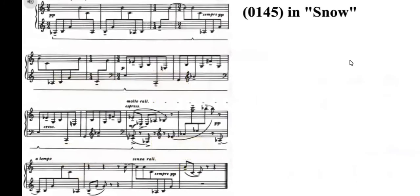Now, let's look into the score and see how the composer exploits these two musical ideas. First, we shall focus on the application of 0145 in the first movement Snow. It is introduced note by note in the beginning measures.